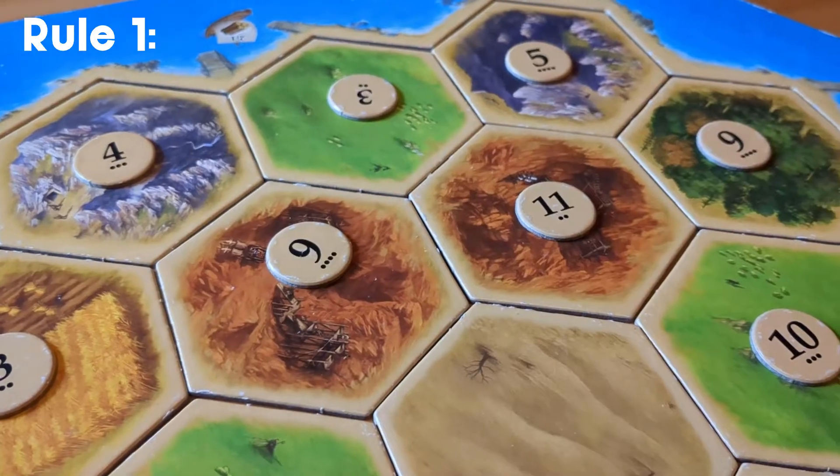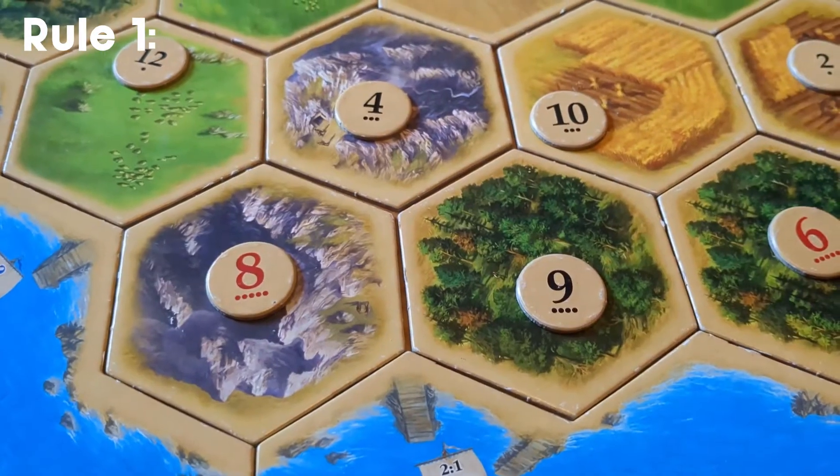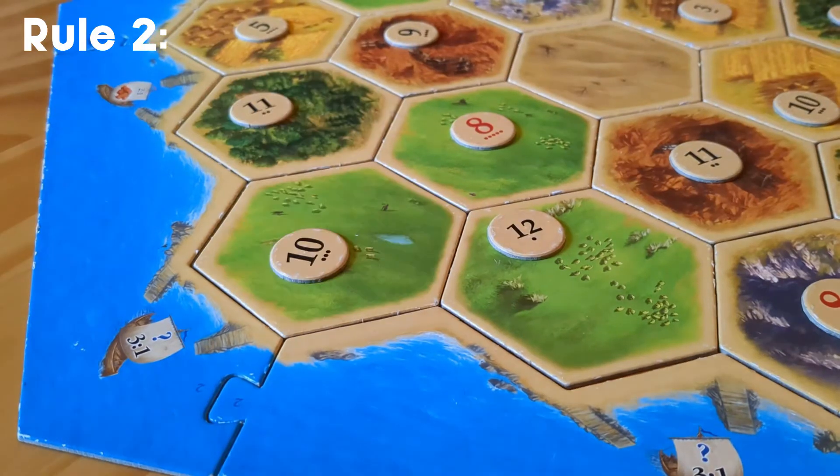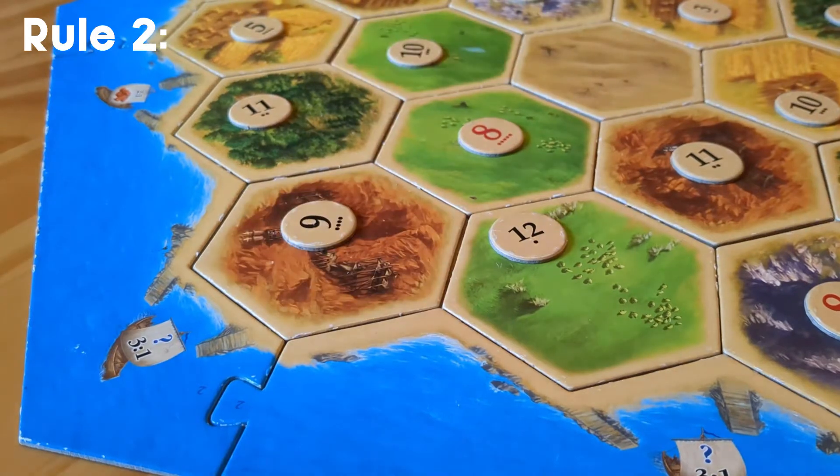Rule one, no two brick tiles or stone tiles next to one another. Rule two, no three sheep, wheat or wood tiles connected to each other.